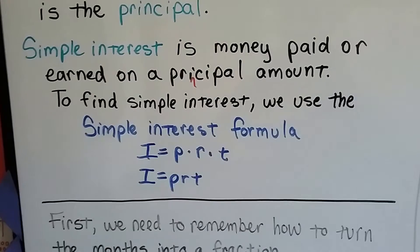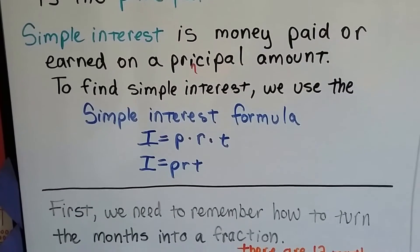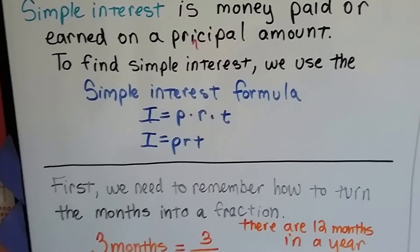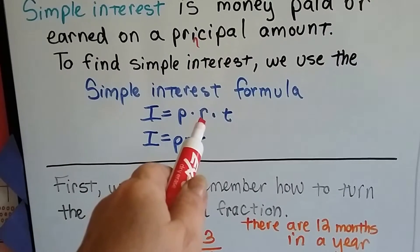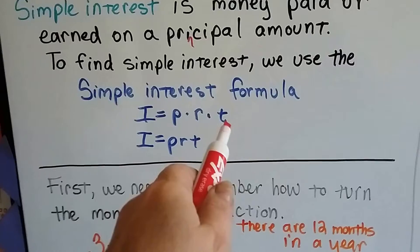To find simple interest we use the simple interest formula: I equals P times R times T. That's the principal amount, the big chunk of money, times the interest rate, times the time - the amount of time you borrowed it or the amount of time you had it in the bank.